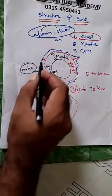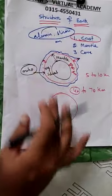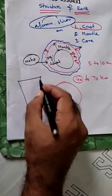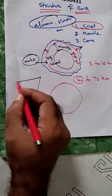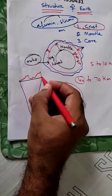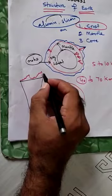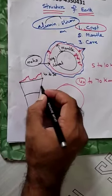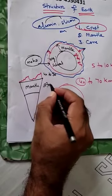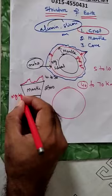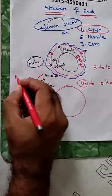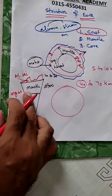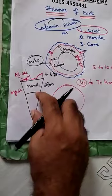The mantle layer is the largest, extending about 300 km. It is in a solid state but can flow. The crust totals 42 to 70 km. Below it is the mantle, composed of magnesium silicates — while the crust above is aluminum silicates.